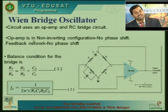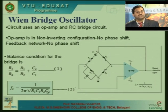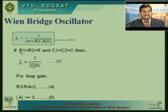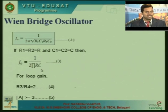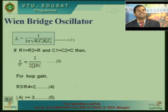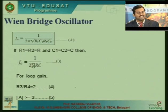The generated frequency of oscillations is given by F₀ = 1/(2π√(R1·C1·R2·C2)). The feedback network decides the frequency of oscillations. If R1 = R2 = R and C1 = C2 = C, then F₀ = 1/(2πRC). So depending on the desired frequency, you can select the appropriate values of resistance and capacitance.